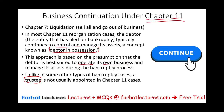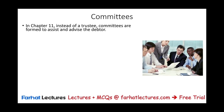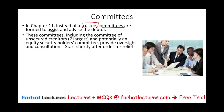The first thing to know is that trustees are usually not involved. Instead, committees are formed to assist and advise the debtor. These committees include a committee of unsecured creditors — usually the seven largest creditors — and potentially an equity security holders committee of stockholders, to provide oversight and consultation.